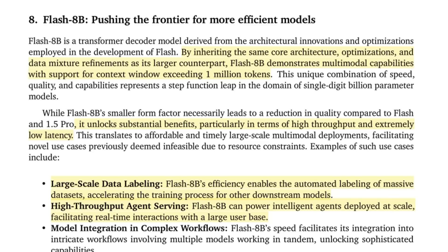Looking at the paper, they talk about that the Flash 8B is basically inheriting the same architecture, optimizations, and data mixture refinements as its larger Flash counterpart. It can also handle a million tokens, just like the previous big one. The key difference is that because of its size, it's optimized for high throughput and low latency use cases.